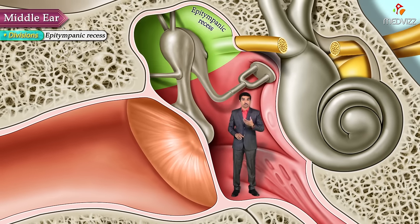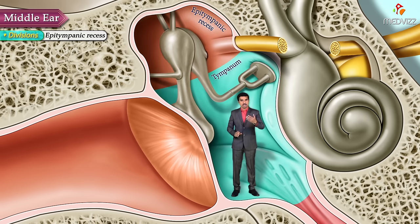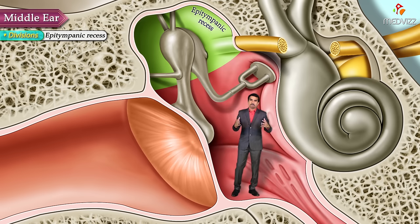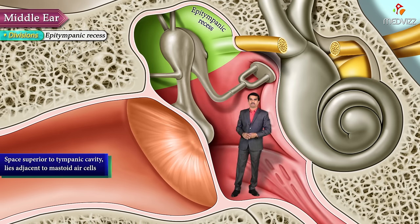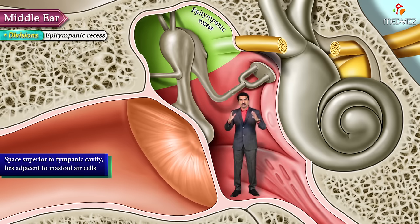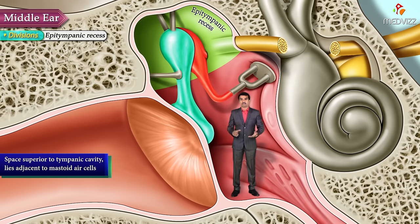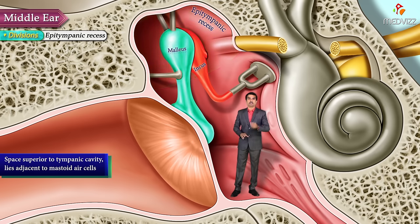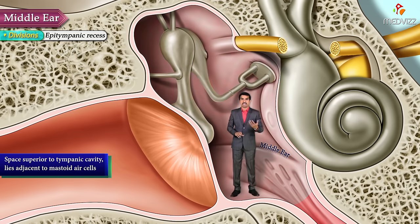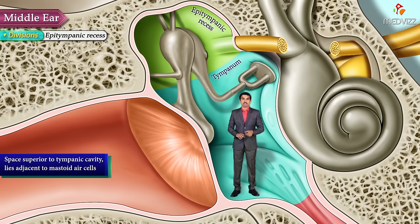The epitympanic recess is the other division of the tympanic cavity. It is a space located superior to the tympanic cavity, lying adjacent to the mastoid air cells. The ear ossicles such as the malleus and incus partially extend upwards into the epitympanic recess. This is how the middle ear cavity is divided into the tympanum and the epitympanic recess.